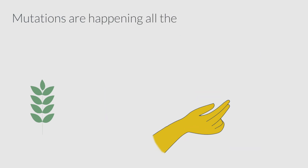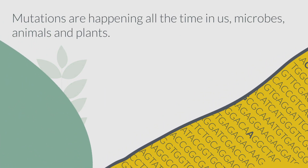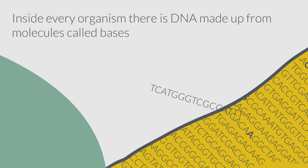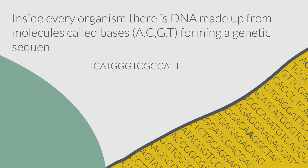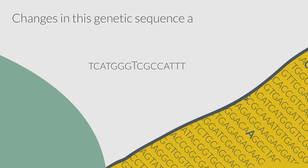Mutations are happening all the time — in us, microbes, animals and plants. Inside every organism there is DNA, made up from molecules called bases: A, C, G, T, forming a genetic sequence. Changes in this genetic sequence are mutations.